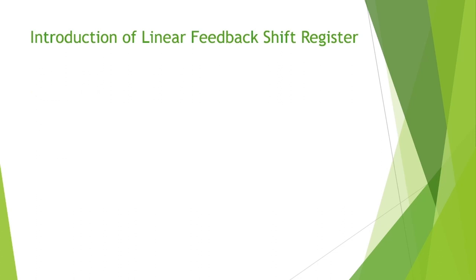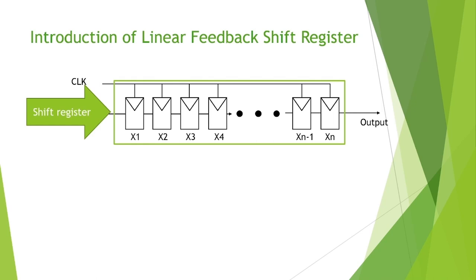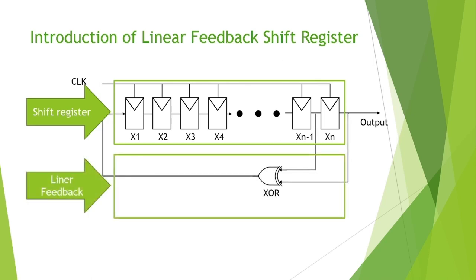Let's see some animation about what a linear feedback shift register is. A shift register consists of a sequence of flip-flops all controlled by the same clock. Then we have the linear feedback function, demonstrated here with a single XOR gate. We use the last two flip-flops as the data source of the XOR gate computation.